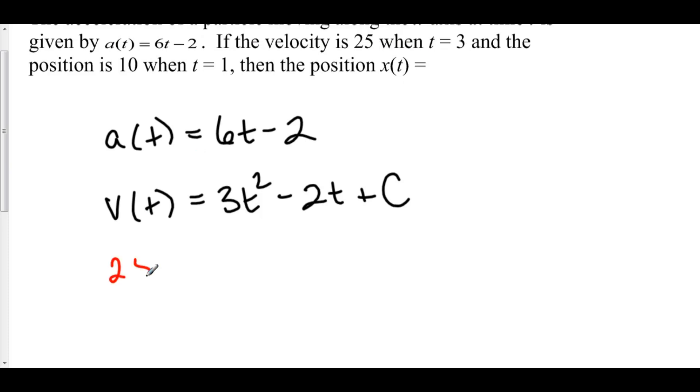Here we have twenty-five is equal to three squared is nine times three is twenty-seven, minus two times three is six, plus c. So here, twenty-seven minus six is twenty-one, twenty-five minus twenty-one, that means that c is equal to four.